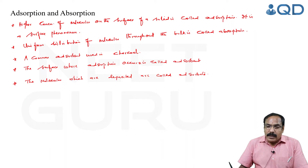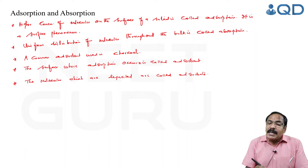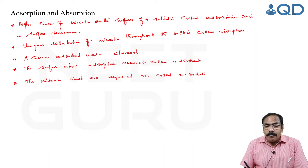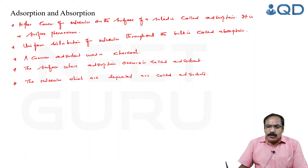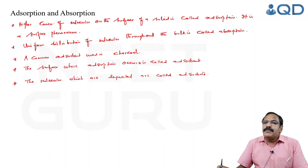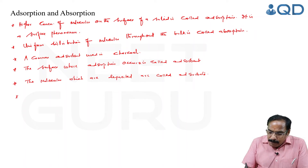Accordingly, there are two types of adsorption. One is chemical adsorption or chemisorption, where a chemical bond is formed between the adsorbent and adsorbate. The other involves a weak van der Waals force — it is called physical adsorption or physisorption.